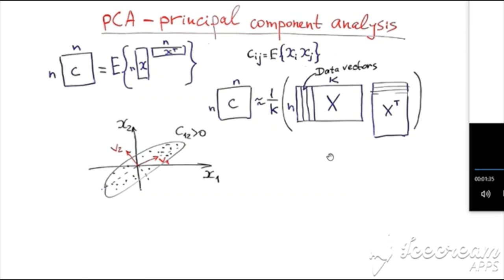Now, if we have many samples of our data and want to compute the covariance matrix approximately from the data, we can put samples of our vector X into columns of matrix capital X. So the first sample will be the first column, the second the second column, and so on. If we multiply it by X transpose, we get the first column multiplied by X transpose plus the second column by the transpose of the second column, and so on. And if we divide this by the number of columns, we get an estimate of the covariance matrix.